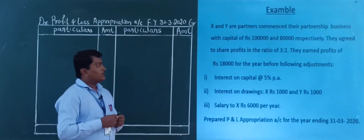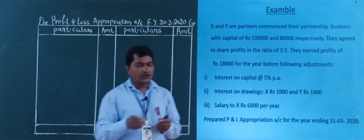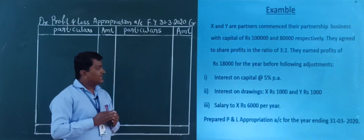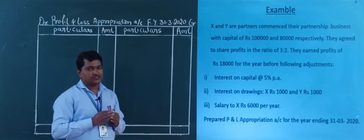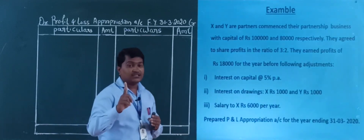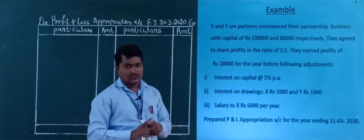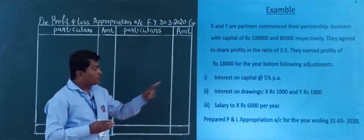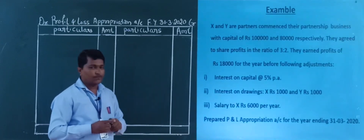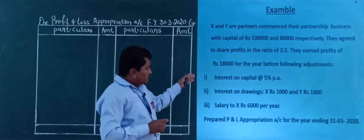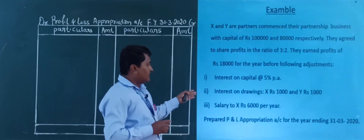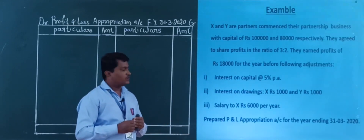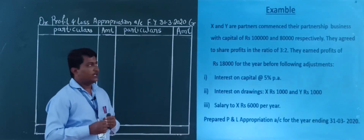They agreed to share profits in the ratio of 3 to 2. They earned a profit of rupees 18,000 for the year before the following adjustments. We need to prepare the profit and loss appropriation account to make adjustments for interest on capital, interest on drawings, and salary to X, for the year ending 31st March 2020.